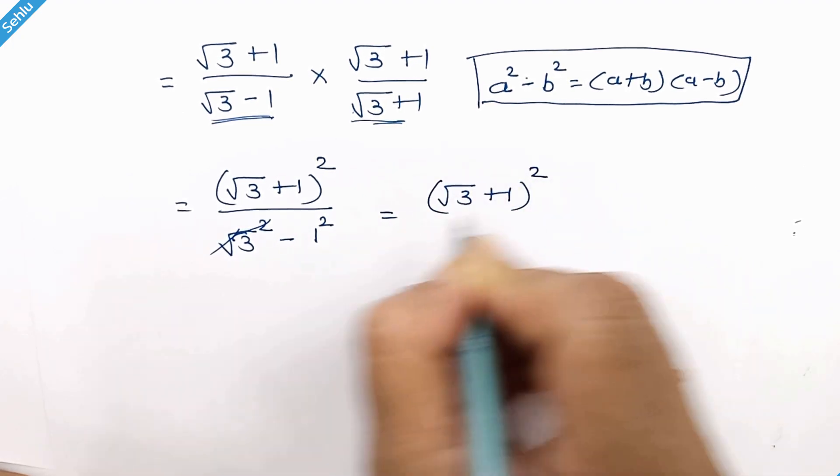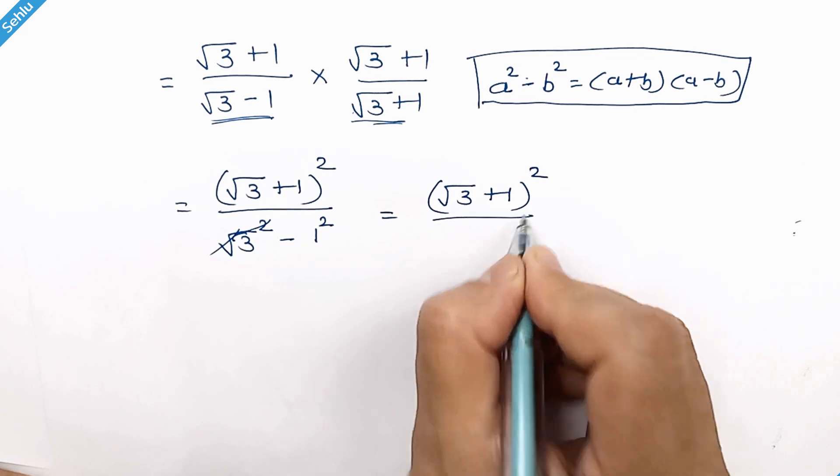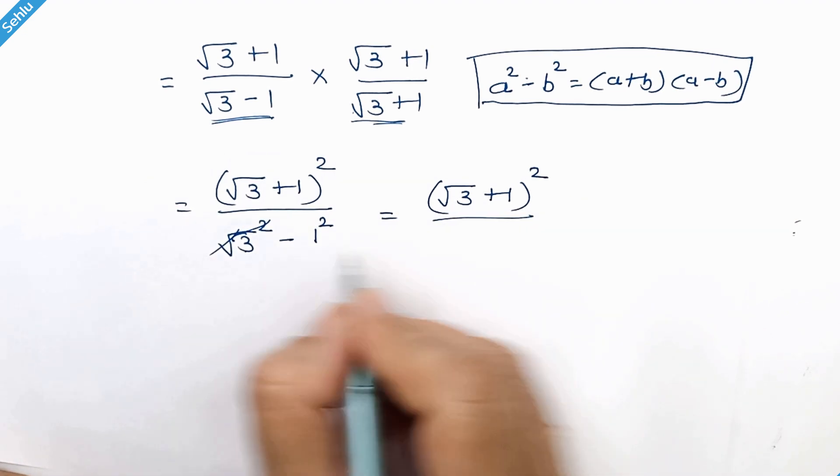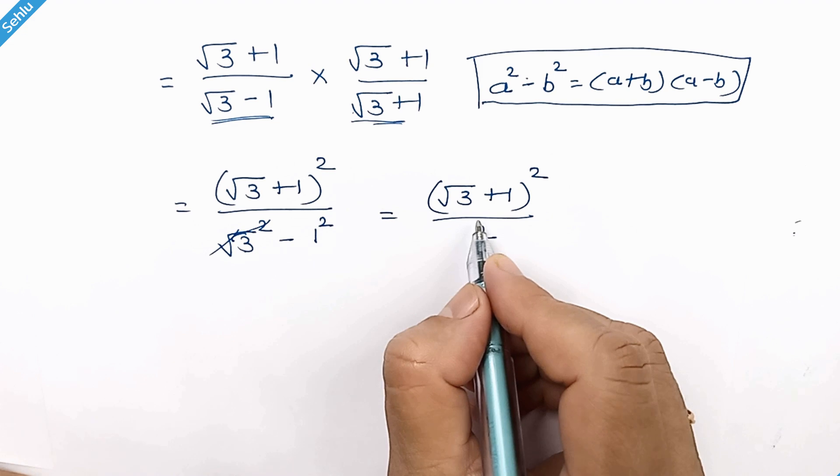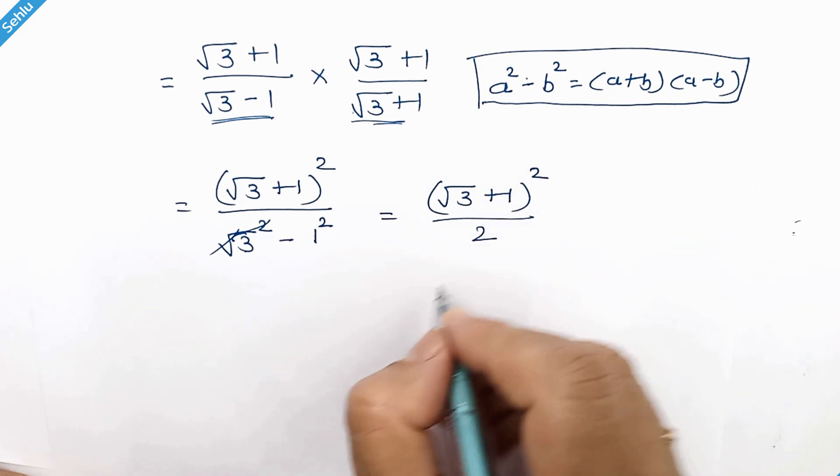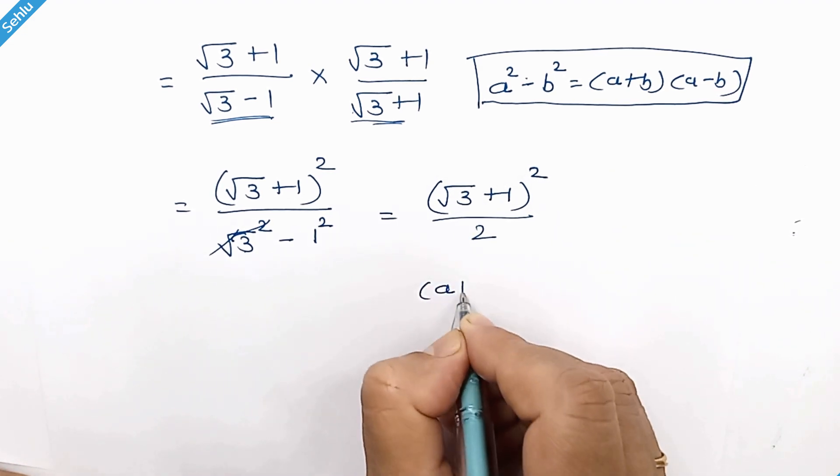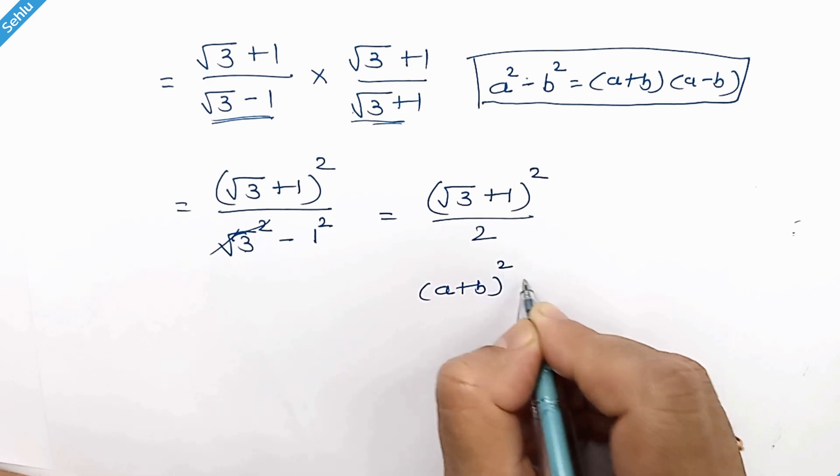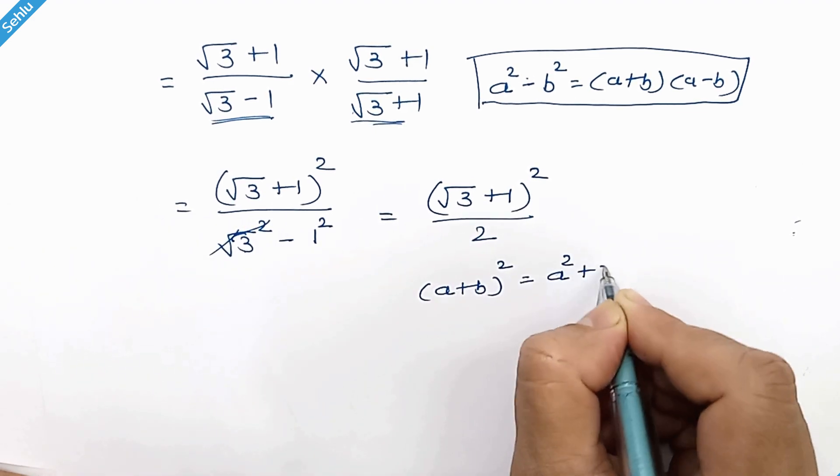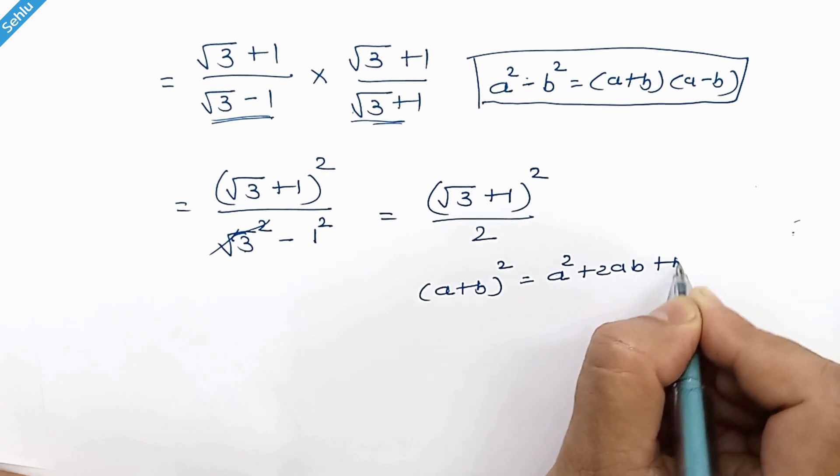Now here we will apply the identity which is a plus b whole squared, then it can be a squared plus 2ab plus b squared.